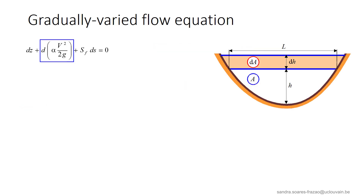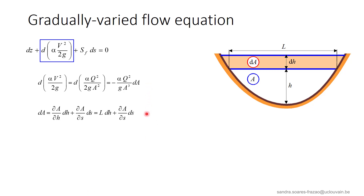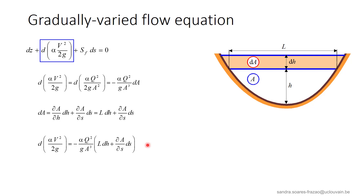We will now develop the second term with v squared over 2g. This differential form can be expressed as a function of dA, and dA can be developed as indicated here. The last term accounts for a possible non-prismaticity of the channel in order to end up with a general expression. So the differential form of the kinetic energy term is this expression, also a function of dh and ds. Of course, if we assume a prismatic channel, this term dA ds will be equal to 0.